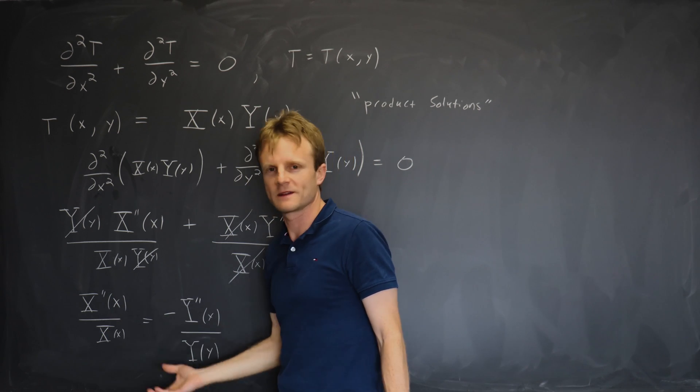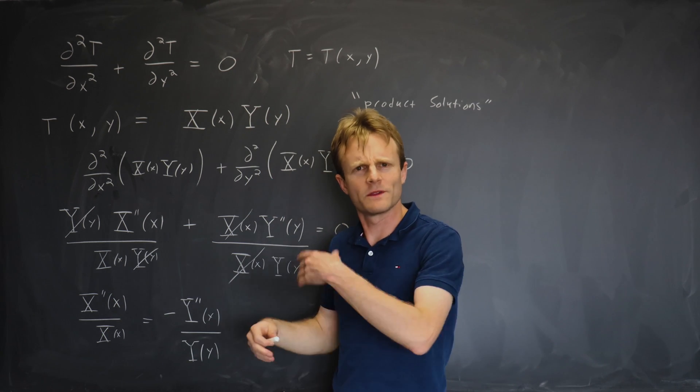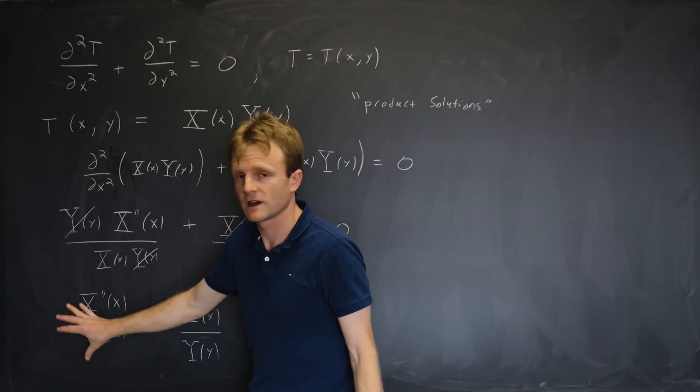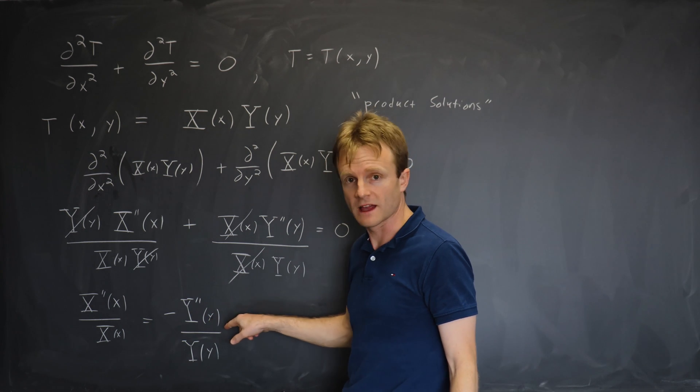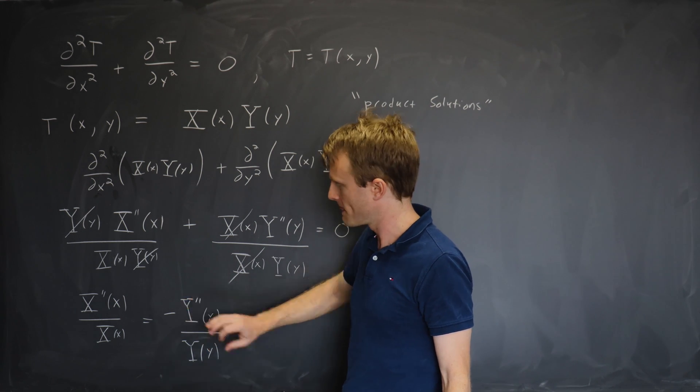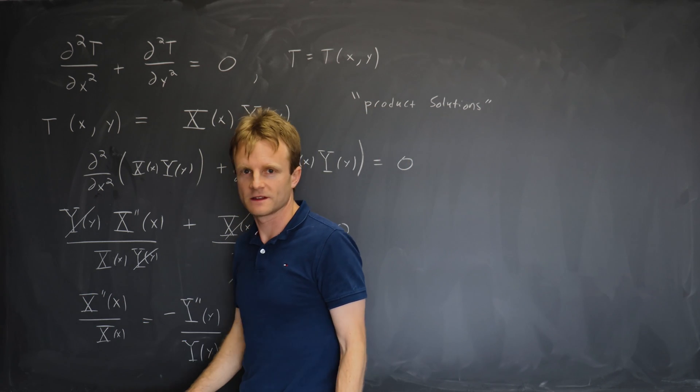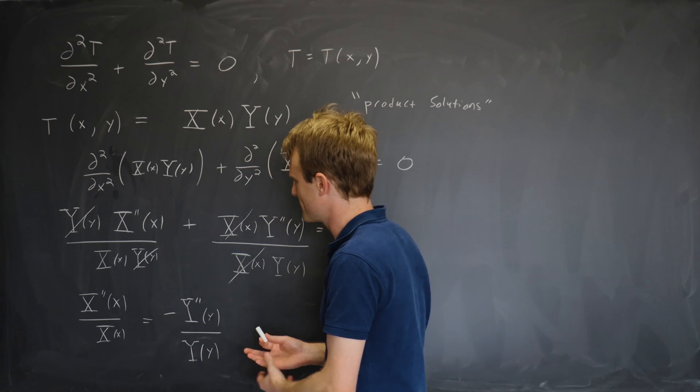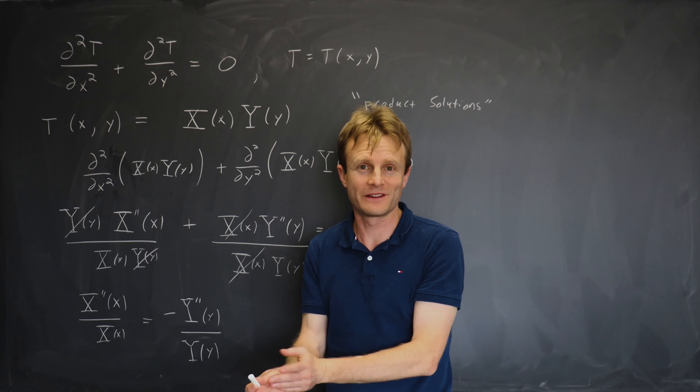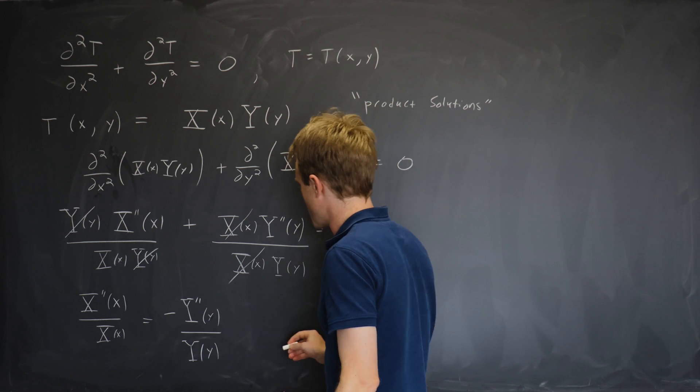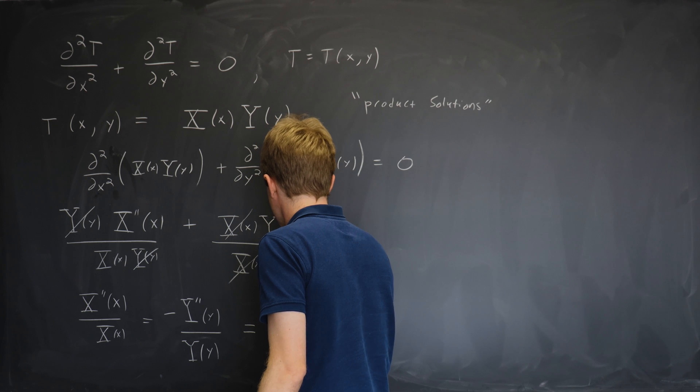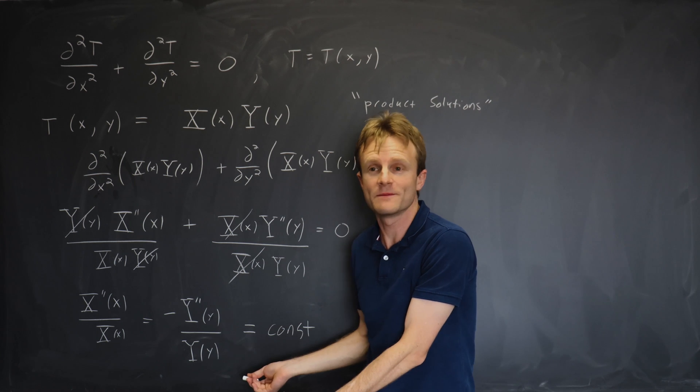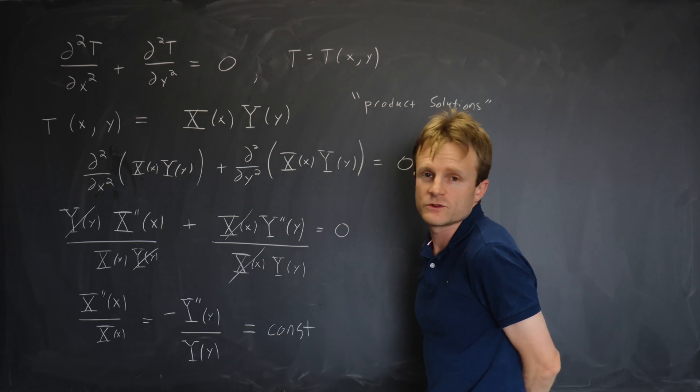And then of course the same is true from the left hand side because they're equal. And we can run the same argument starting from the left hand side. Let's imagine we changed x a little bit. Well the left hand side might change. But the right hand side can't change. It doesn't depend on x. So this is really constant. But that means the left hand side doesn't depend on x either. It's a constant. So you make this argument on both sides. And you find that neither side can actually depend on the thing it depends on. And so that means that both sides of the equation must be equal to some constant, which of course has to be the same constant because they're equal.